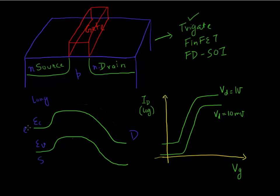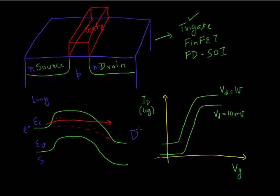For electrons present in the source region, they essentially see a barrier for going to the drain. When you apply a gate field and keep increasing it, you negate this barrier, and then electrons can flow from your source to your drain.